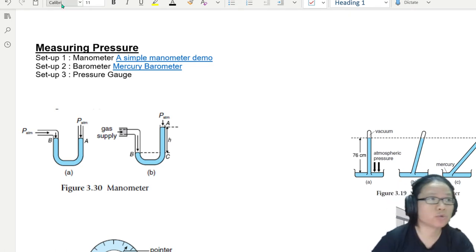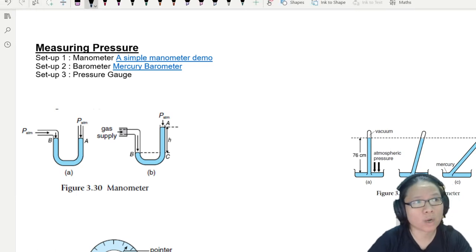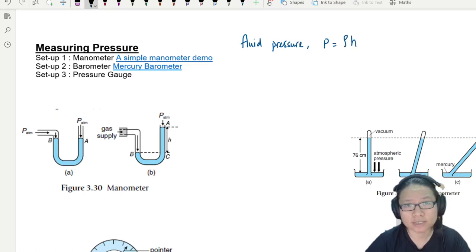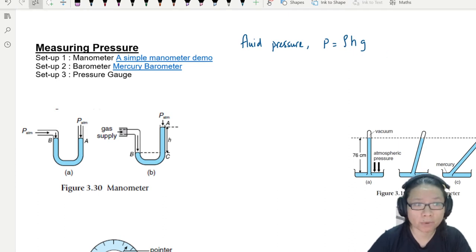But first, let's do a bit of a quick recap about what is a fluid pressure. So previously in the recording, we have came up to fluid pressure p as equivalent to density times the height times the gravitational constant g. So this h is actually height of the fluid column. And the first device we're going to talk about is a manometer.